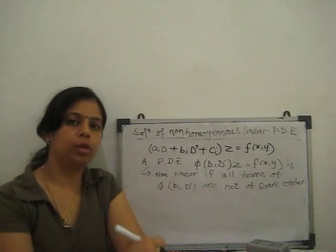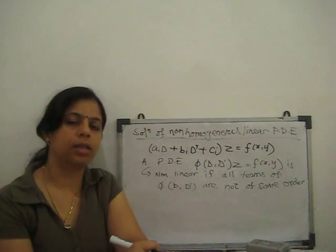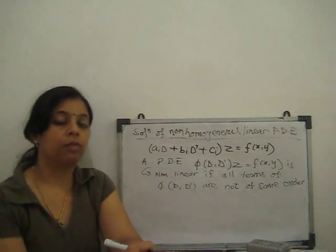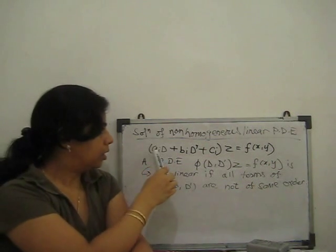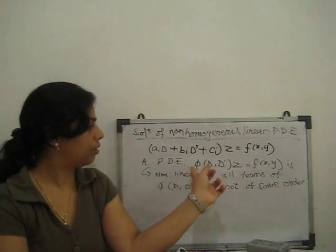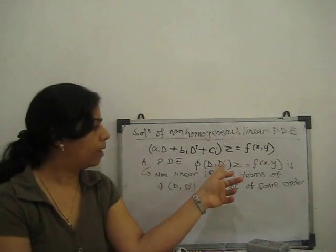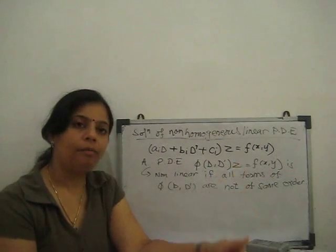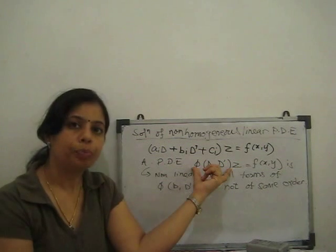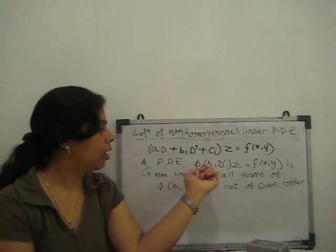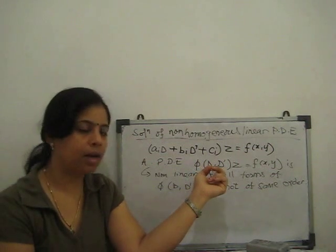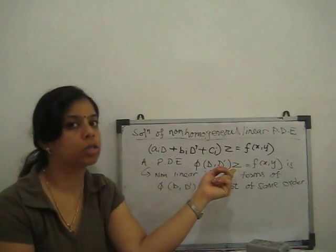In my previous video you can see how to solve homogeneous linear partial differential equation. In non-linear partial differential equation, what is the difference? That is the form of the partial differential equation — phi of D, D' of z equal to f of x and y. This side has partial derivatives with respect to del/del x and del/del y, and z and constants are there.